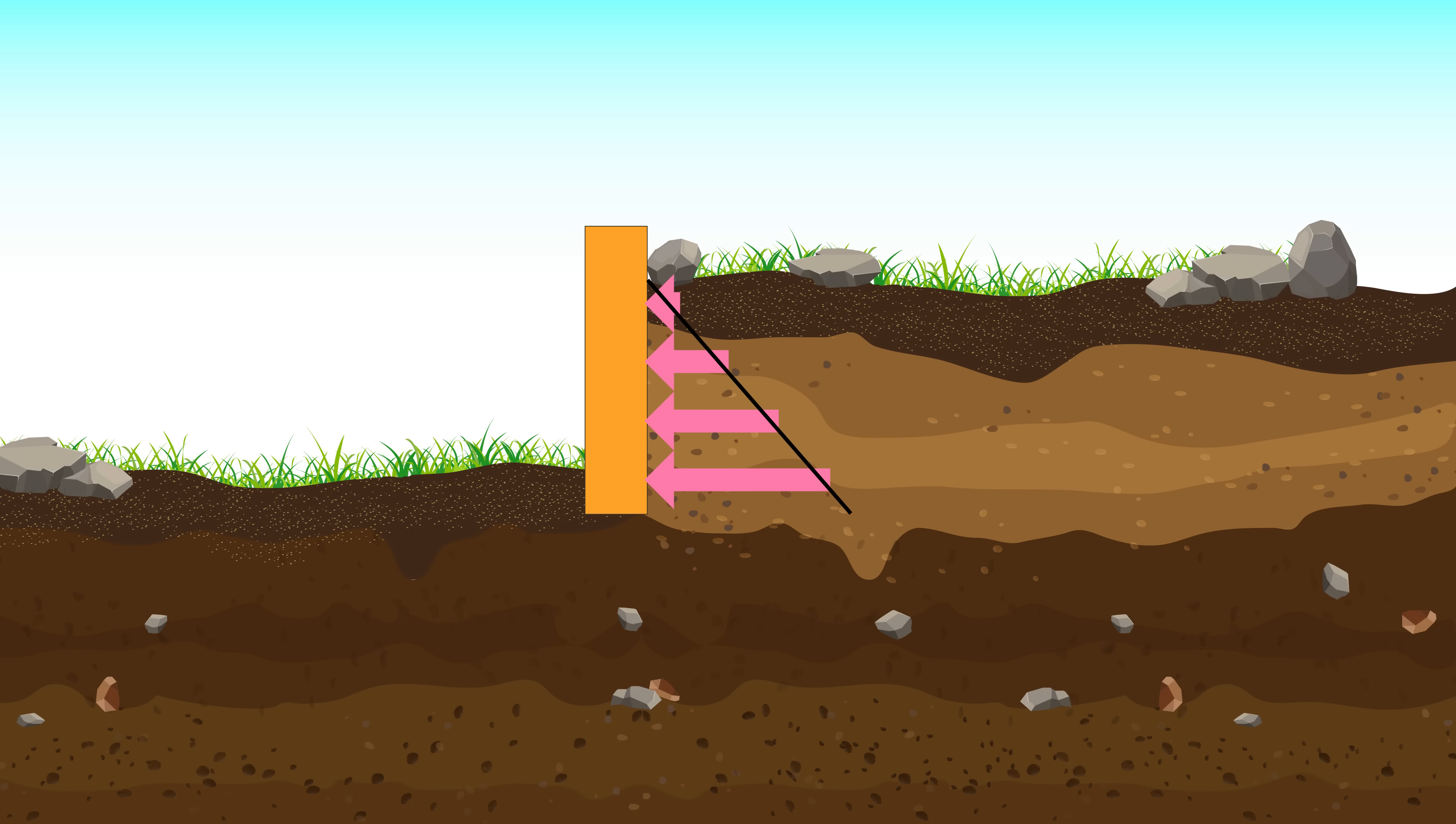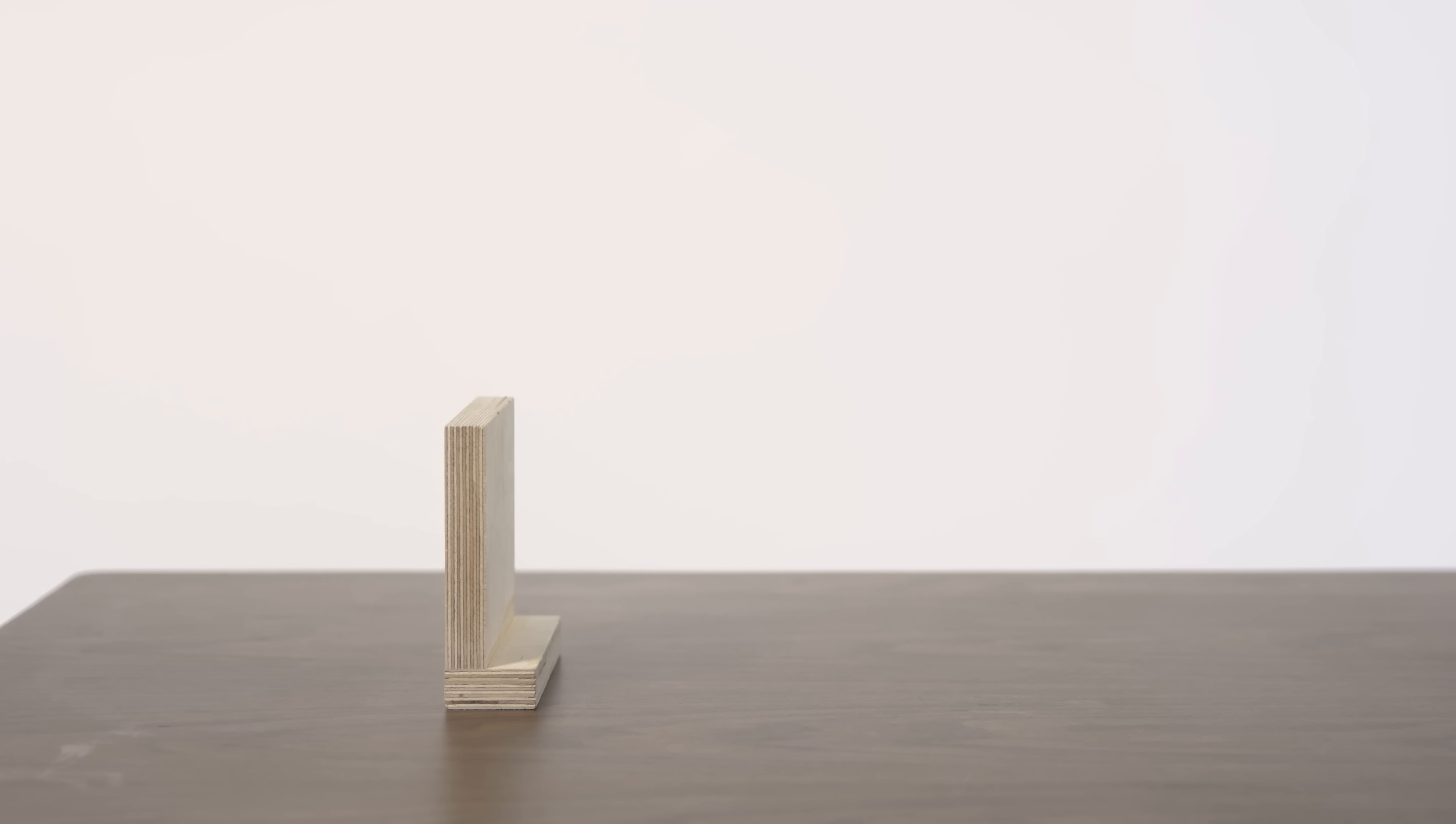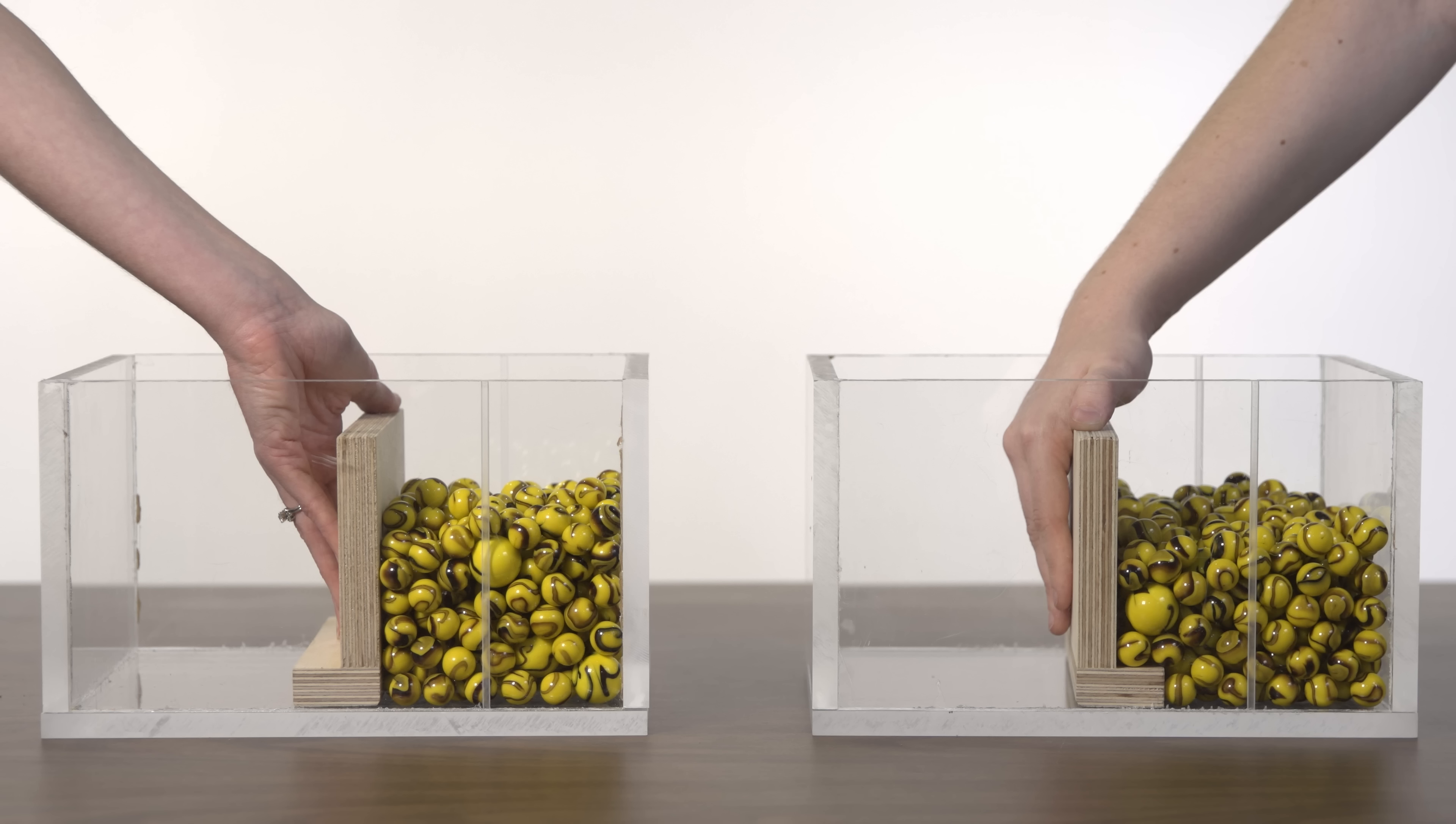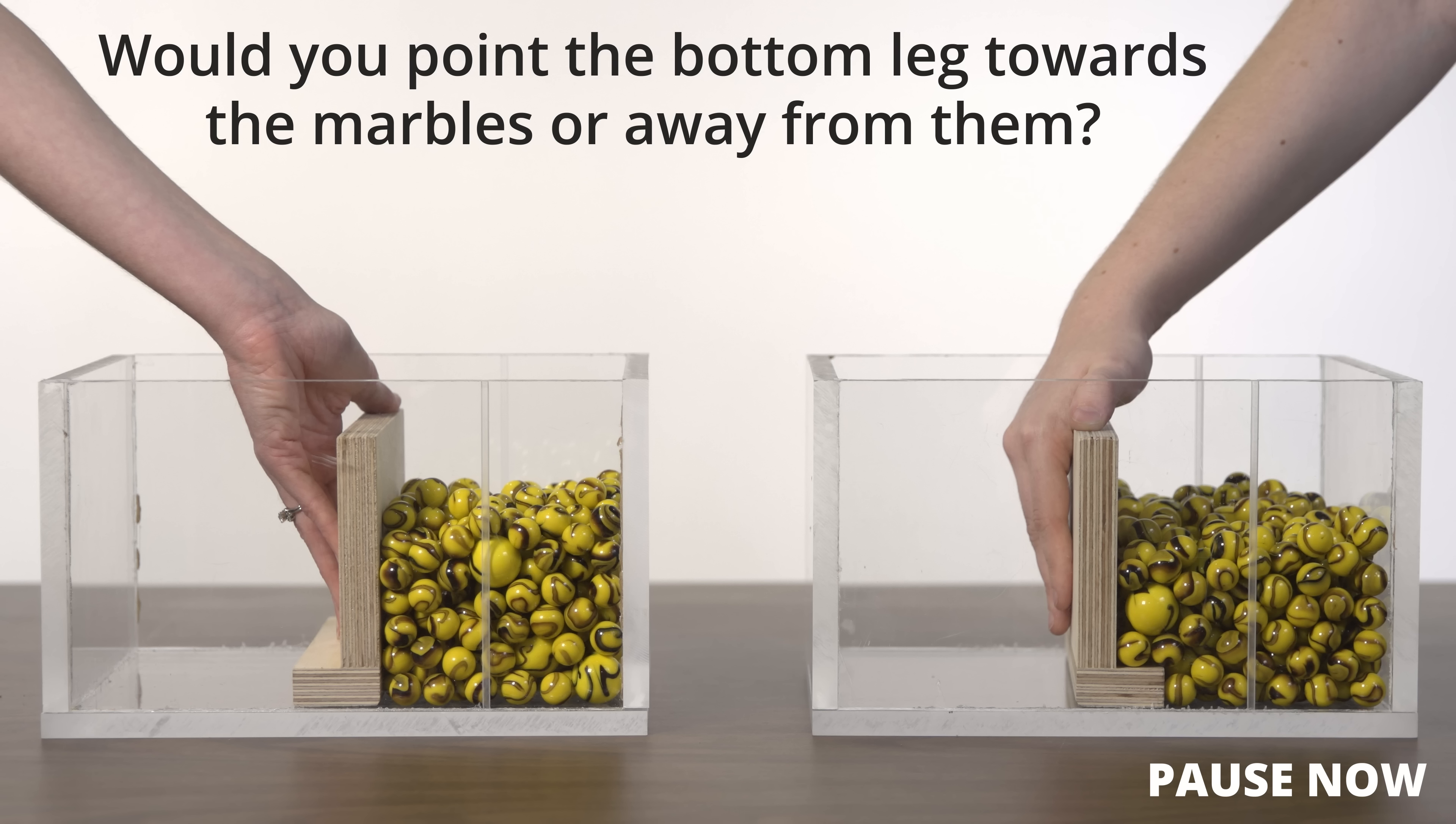Retaining walls must resist these pressures and many strategies exist for doing so. In this video, we focus on the popular L-shaped cantilever design. If you were going to use an L-shaped wall to hold back soil and rock, as represented by these marbles, would you point the bottom leg towards the marbles or away from them?